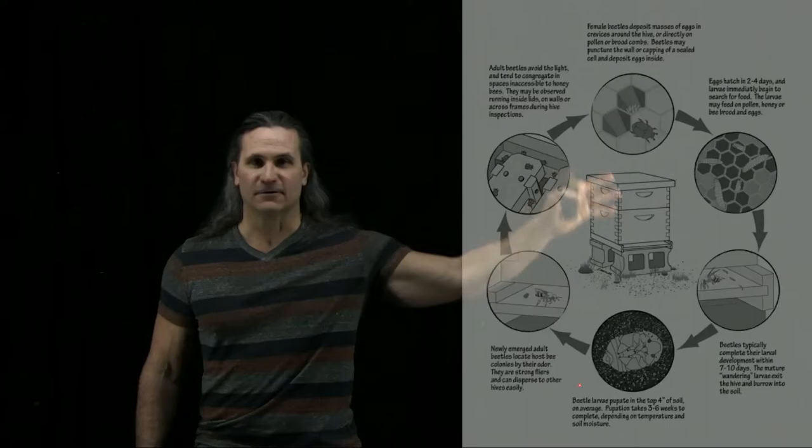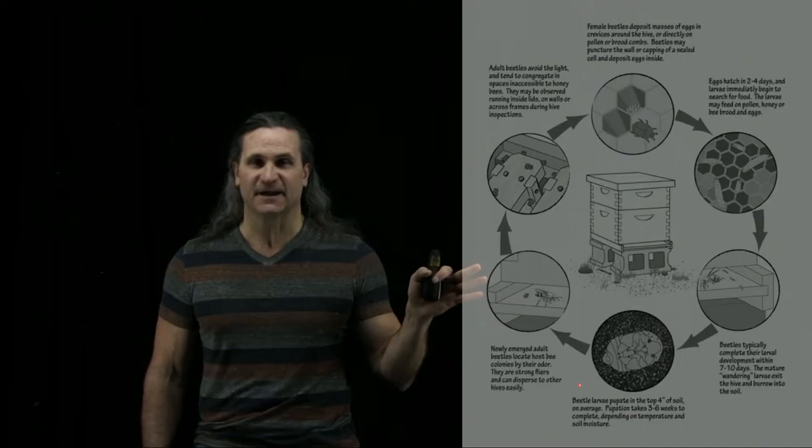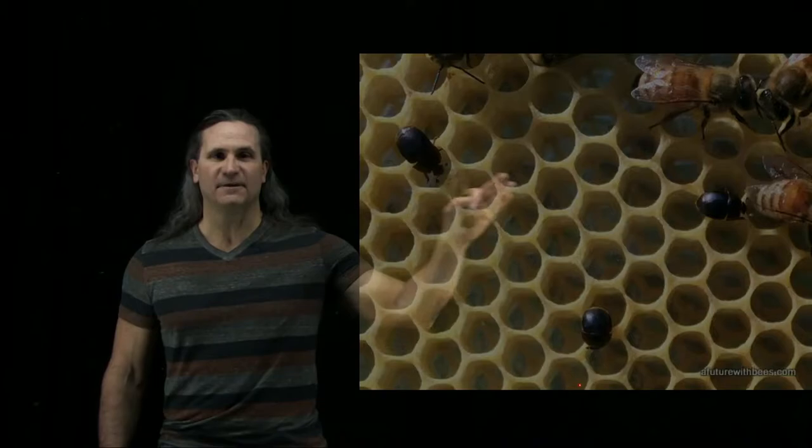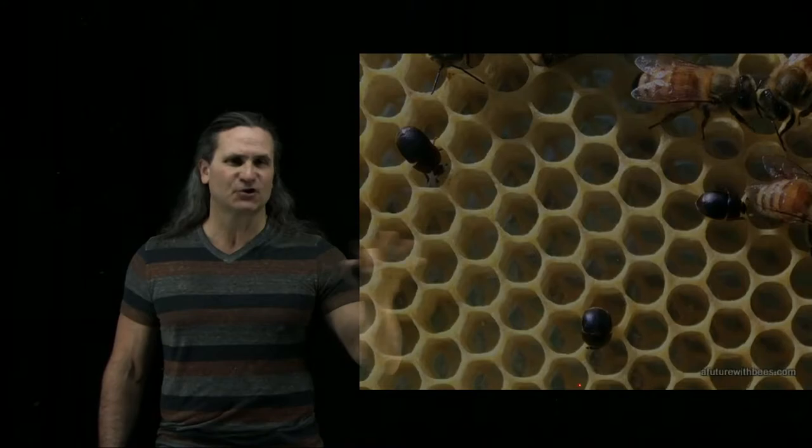Once they've done this, they start to cycle all over again. I've put both the distribution map and this life cycle in the course. Now this is a look at the small hive beetle in context — just how big they are in comparison to the bee — and this is what they look like when they infest your colony. These are the insects that you're looking for when you pop open your lid.